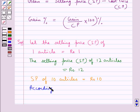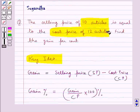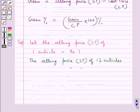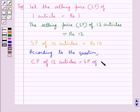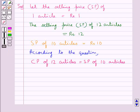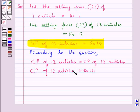Now, according to the question, the cost price of 12 articles is equal to the selling price of 10 articles. We know that the selling price of 10 articles is rupees 10. So we get the cost price of 12 articles is rupees 10.